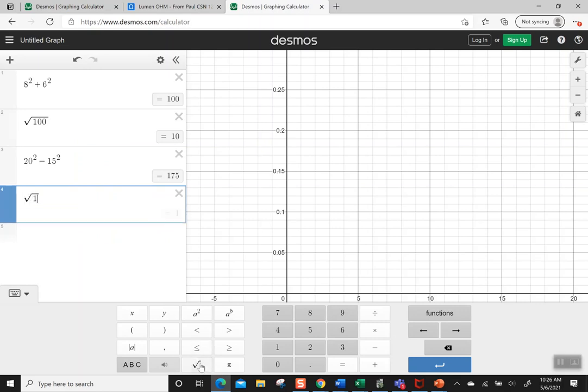So I hit my square root button, 175, and it says I have 13.22875 goes on. So no expectation that every time we do this that we get an integer. We're not always going to get a whole number.